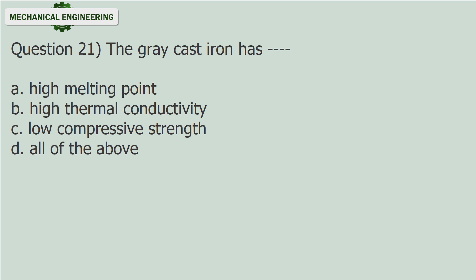Question 21: Gray cast iron has — (fill in the blank). A. High melting point. B. High thermal conductivity. C. Low compressive strength. D. All of the above.